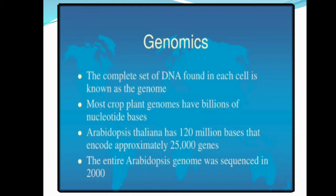Most crop plant genomes have billions of nucleotide bases. Arabidopsis has 120 million bases, and the entire Arabidopsis genome was sequenced in 2000.